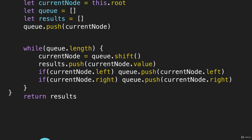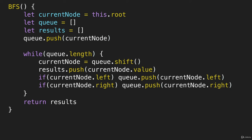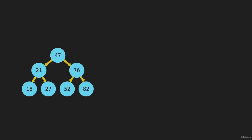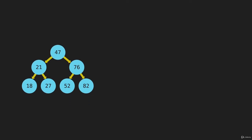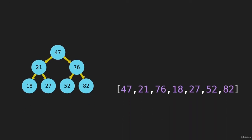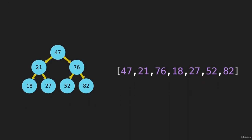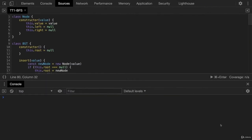Let's bring the rest of our code back. This is the entire breadth first search method. We'll look at this code in a second in DevTools, and when we do, we will build this binary search tree and we will expect to see this array returned. So let's flip over to DevTools.